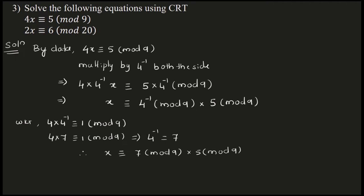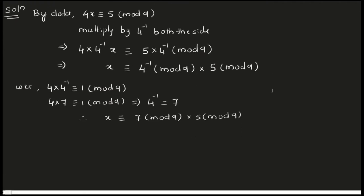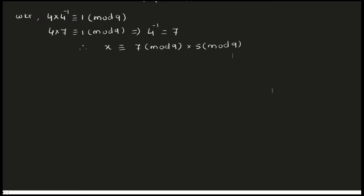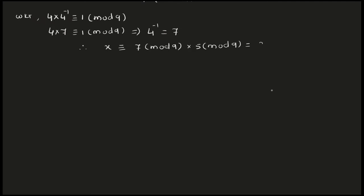We are converting the given congruent equation into standard form. 7 times 5 is 35 mod 9. When you divide 35 by 9, the remainder is 8. Since 8 is less than 9, you can stop here. So x is congruent to 8 mod 9. Call this equation 1.